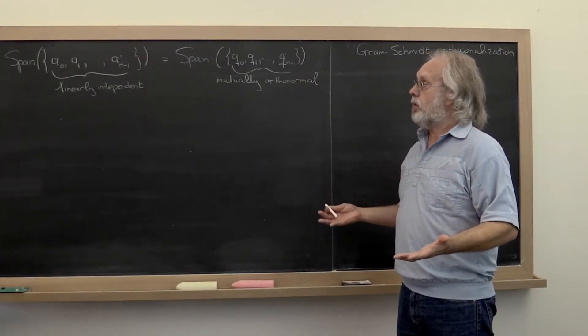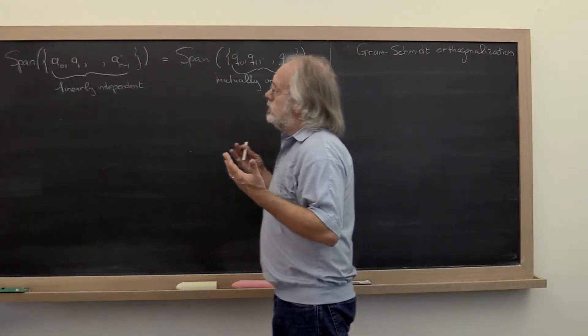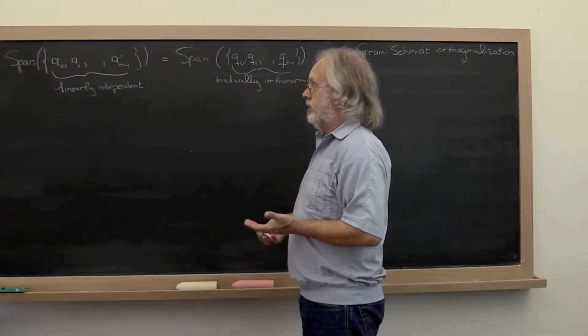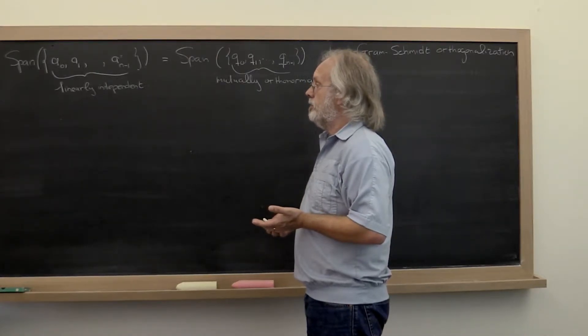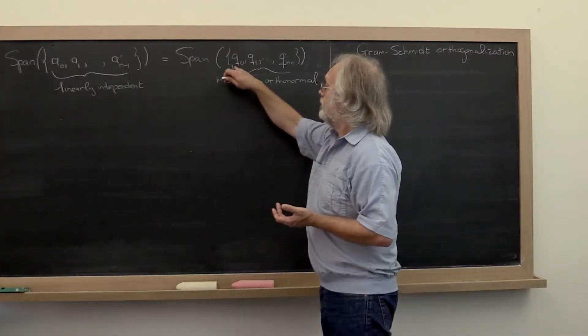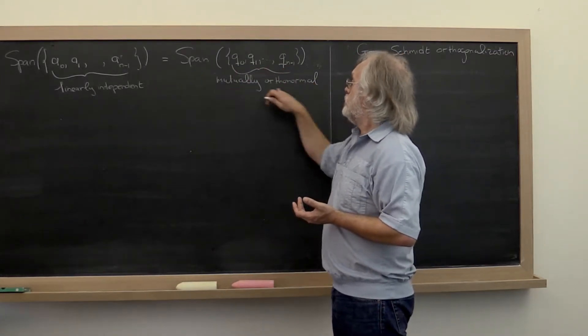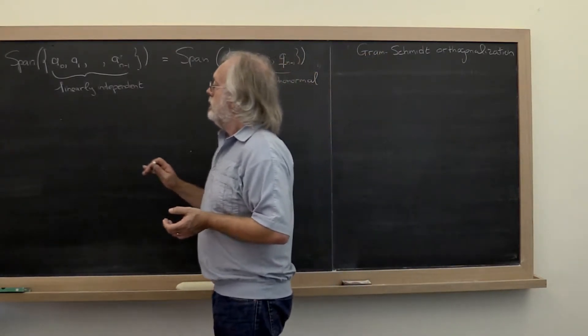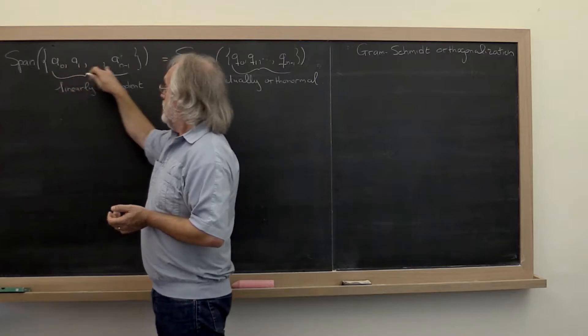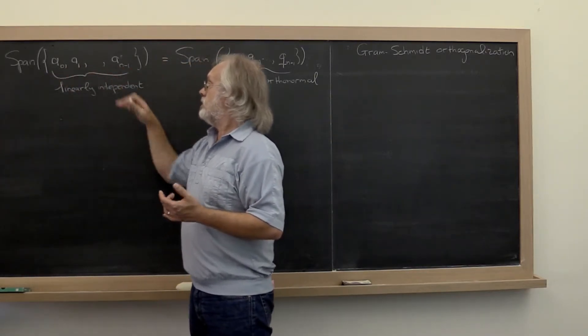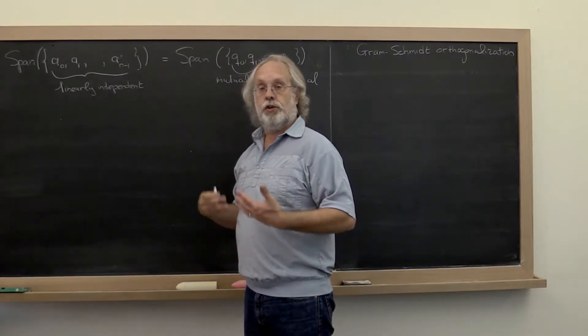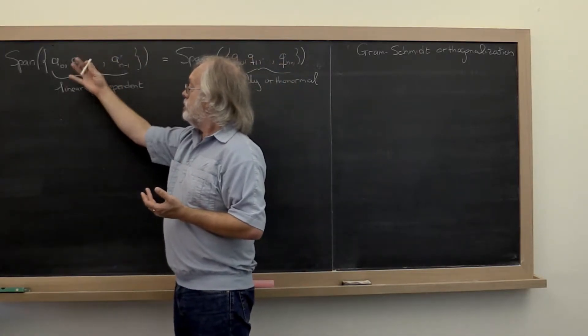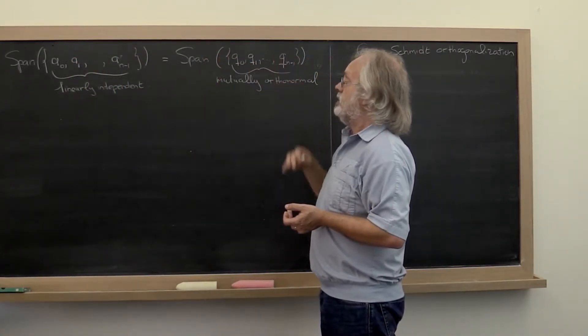So the classic problem is the one where you're given a set of n vectors, a0 through a(n-1). And you would like from those to compute a set of mutually orthonormal vectors in such a way that the span of these vectors is the same as the span of the original vectors.